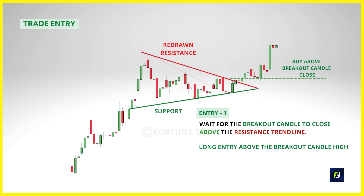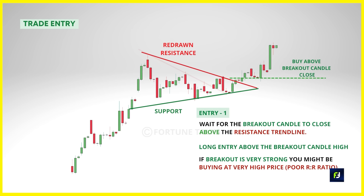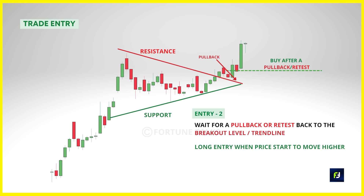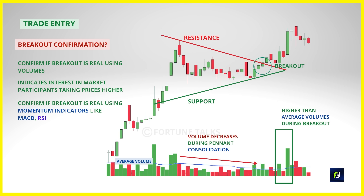Sometimes the breakout candle will be too large and you'll be buying at a very high price, affecting your reward-to-risk ratio. The best move then is to not take the trade at all, or wait for a pullback or retest back to the breakout level. However, because of the explosive nature of pennant breakouts, chances for a pullback or retest are fairly dim — so the best possible entry is above the breakout candle high. During the pennant consolidation, volume should decrease due to the evident shrink in volatility, and the breakout should be supported by higher-than-average volumes indicating a rise in buying interest.